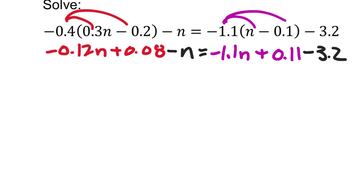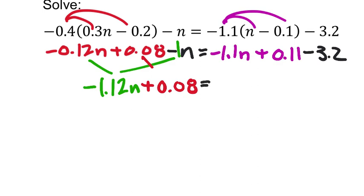So there's some distribution. We do have some like terms to combine. On the left, I got some ns. Negative 0.12n and then negative 1n. These two are going to combine to give us negative 1.12n with positive 0.08. Nothing to combine it with. On the right side, I don't have any other n terms to combine negative 1.1n with, but I can combine my positive 0.11 with the negative 3.2, which looks like that's going to be a negative 3.09.